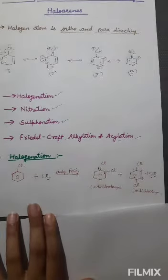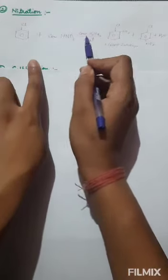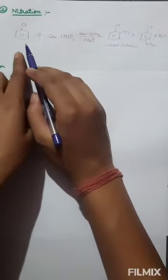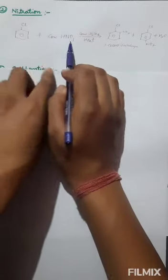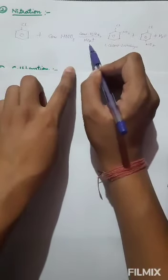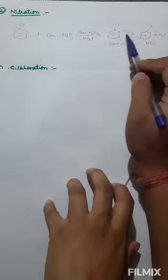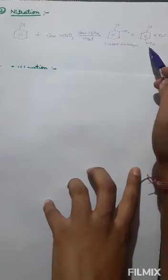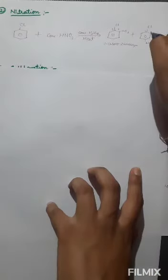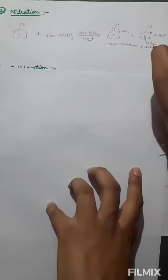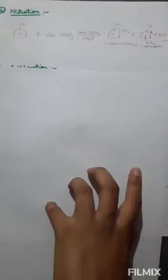The next reaction is nitration. The reagent used is concentrated HNO₃ in the presence of concentrated H₂SO₄. Chlorobenzene reacts with concentrated HNO₃ in the presence of concentrated H₂SO₄ and on heating, the nitro group attacks at the ortho and para positions. The products are 1-chloro-2-nitrobenzene and 1-chloro-4-nitrobenzene, with removal of one water molecule.